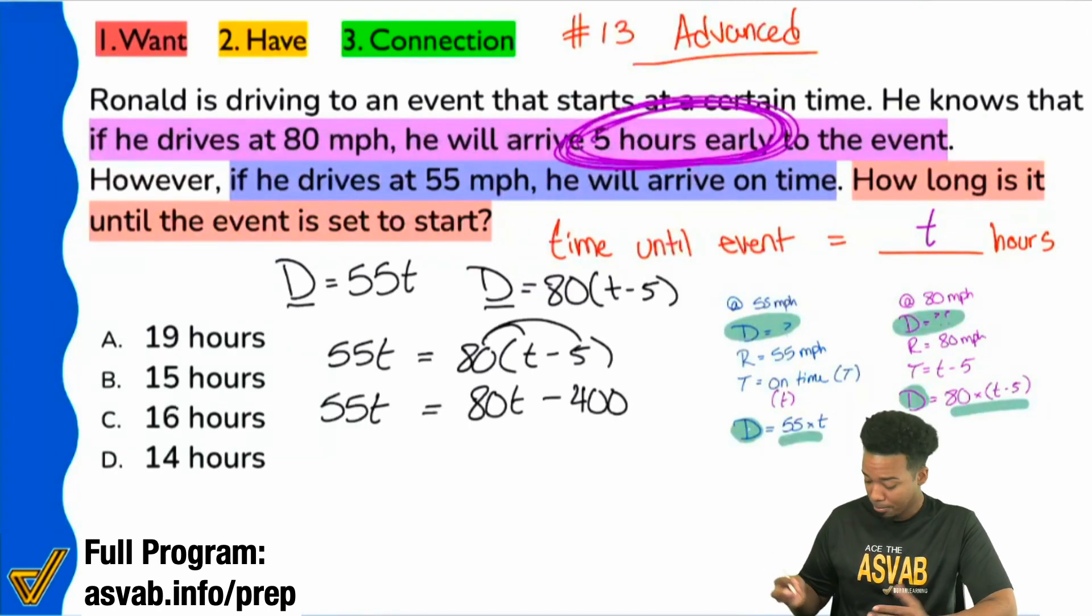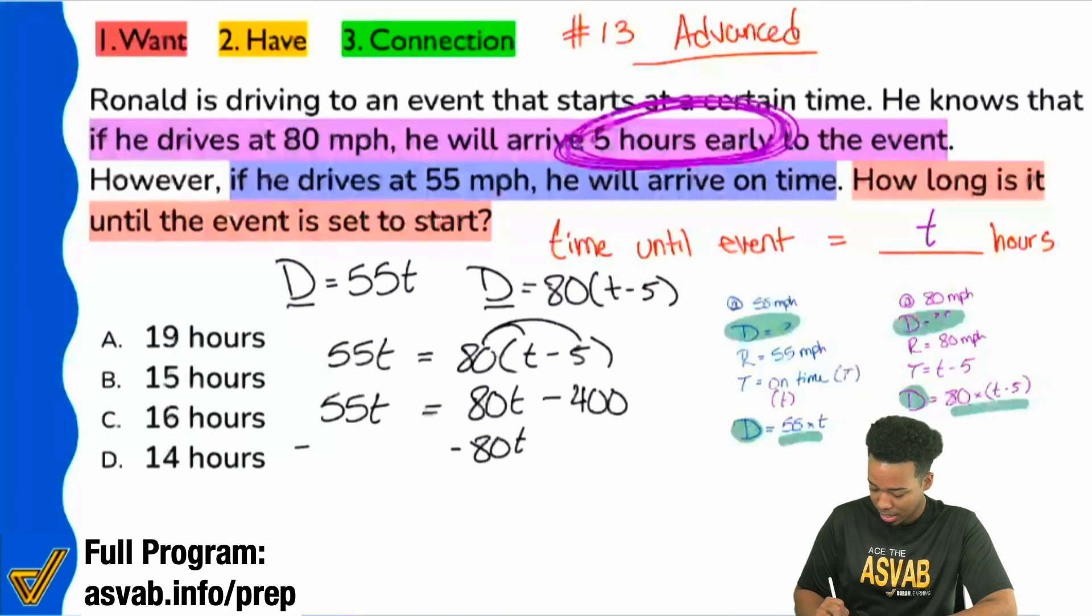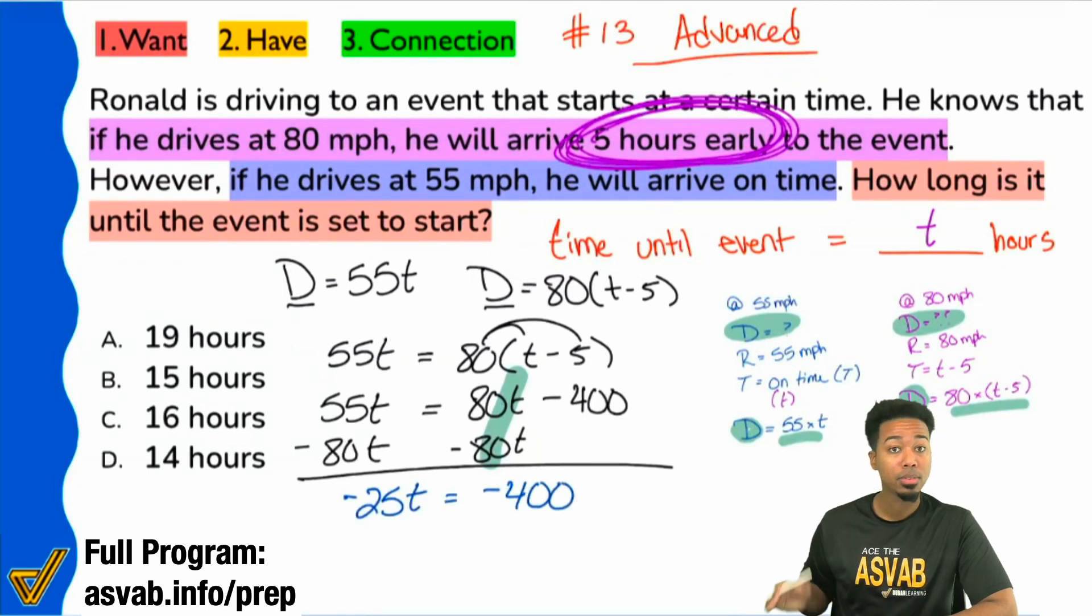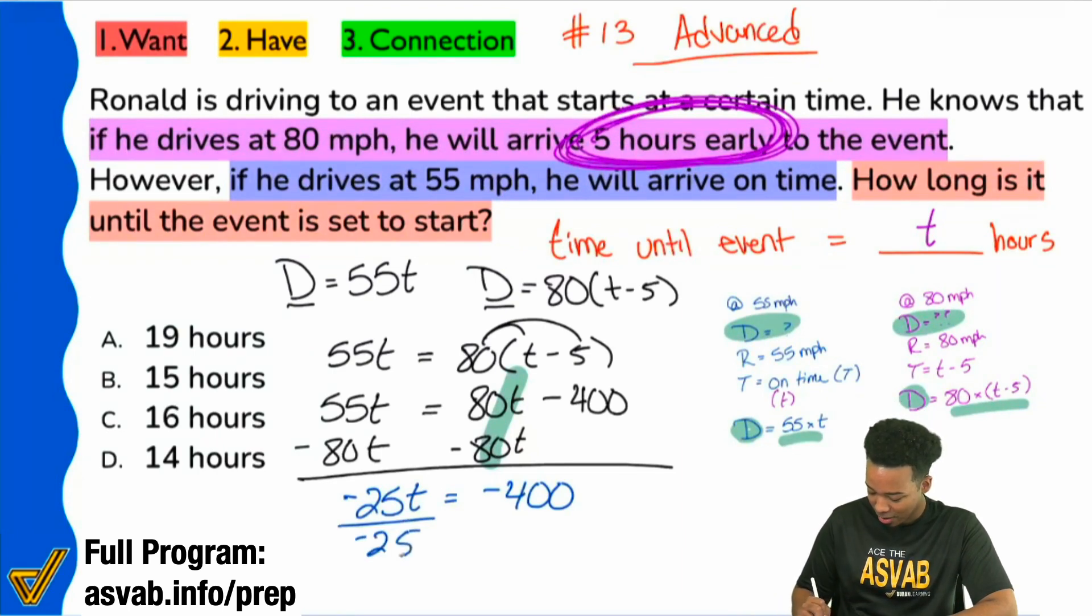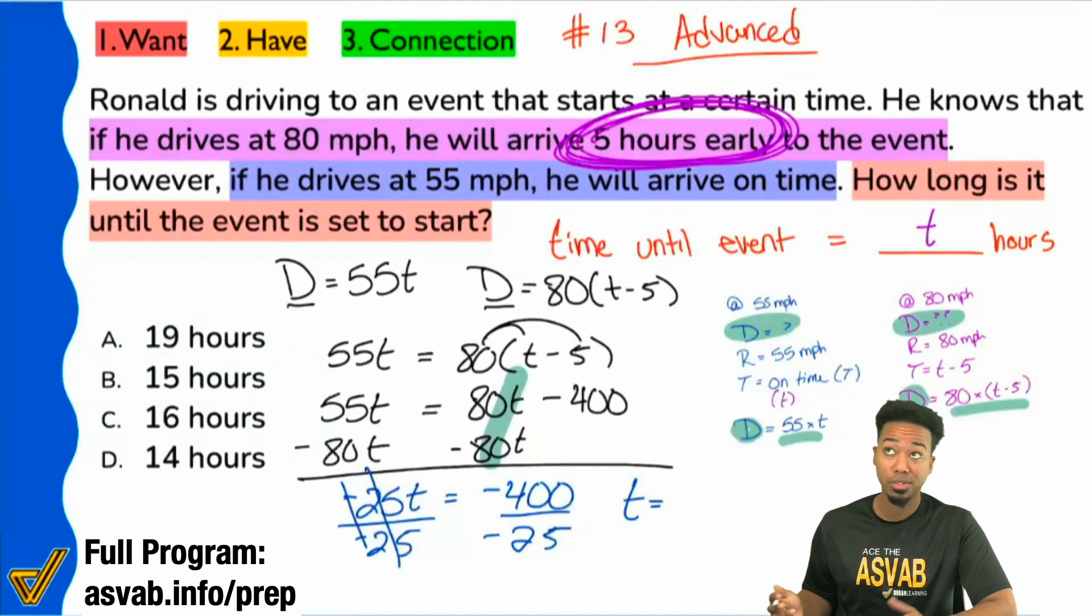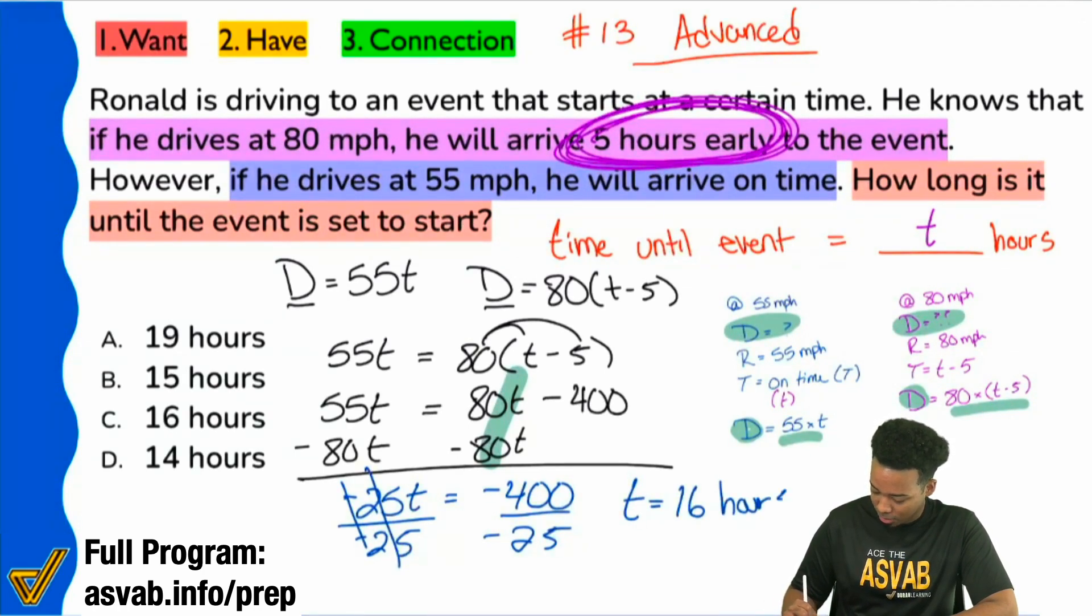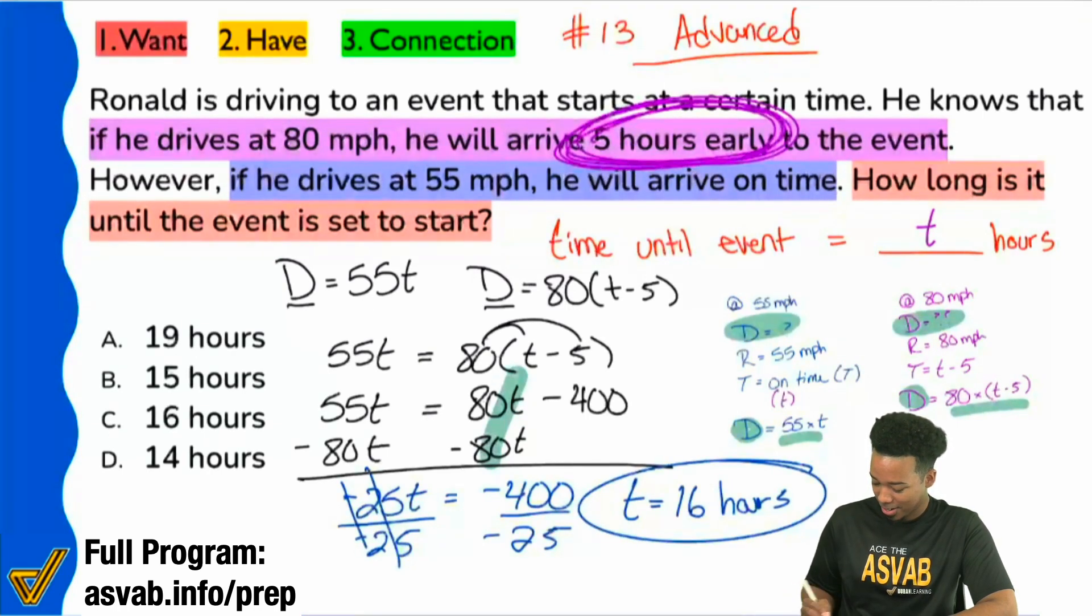Leaving us with negative 25T equals negative 400. Now that we're here, all we have to do is divide both sides by negative 25 and we are done. So the negative 25 cancels out on the left, giving us T equals, so that'll be 400 divided by 25, which for every 100, that's four. So that would be 4, 8, 12, 16. So that would be 16 hours after a little bit of mental math there. And that's our answer.